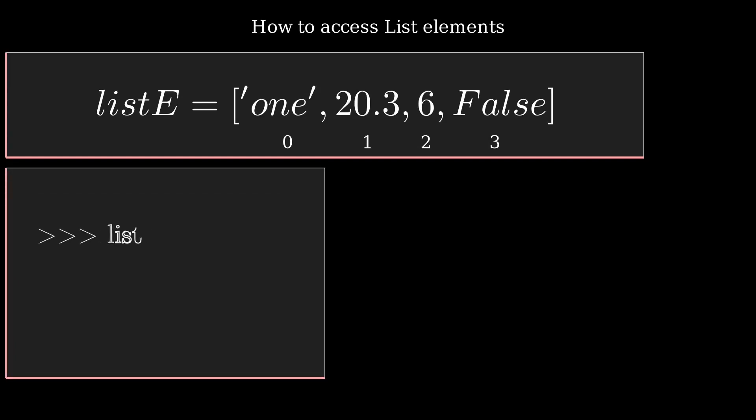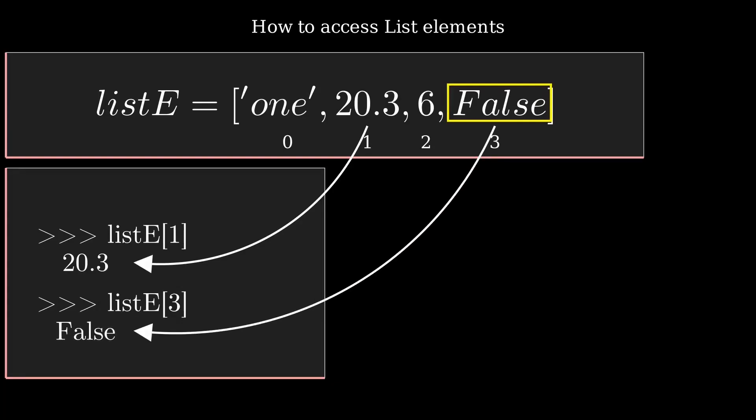To access any element in a list variable, you have to use listE bracket and then the index. If you put index one, it will fetch the second element of listE. Similarly, if you want an element at the end of the list, use listE and give the index three.